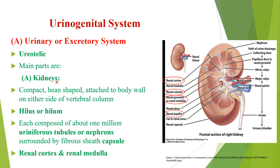The kidneys are the main excretory organs in the rat. They are compact, bean-shaped, and attached to the body wall on either side of the vertebral column. You can see the bean shape of the kidney — on the median side there is a concavity called the hilus or hilum. Each kidney is composed of about one million urinary tubules or nephrons, held together by connective tissue and surrounded by a tough white fiber sheet called the capsule.